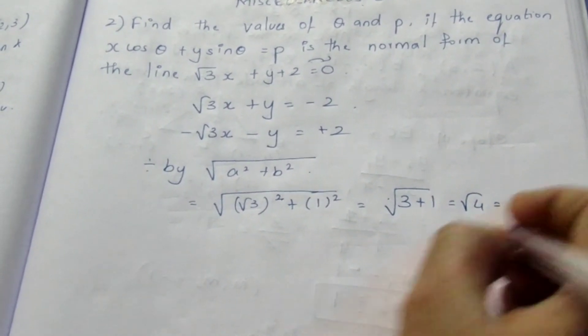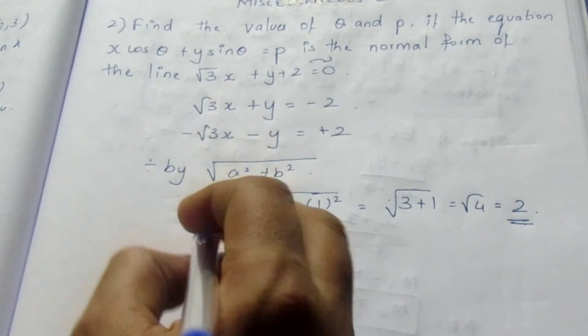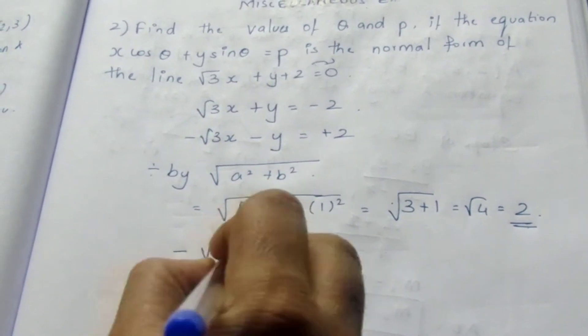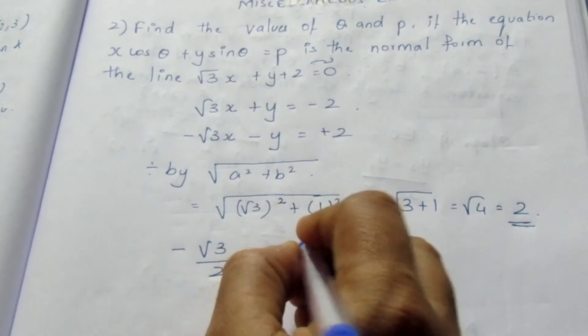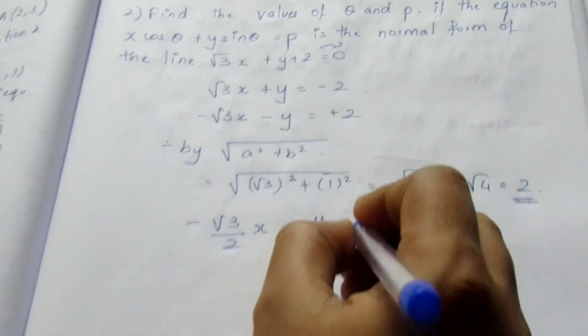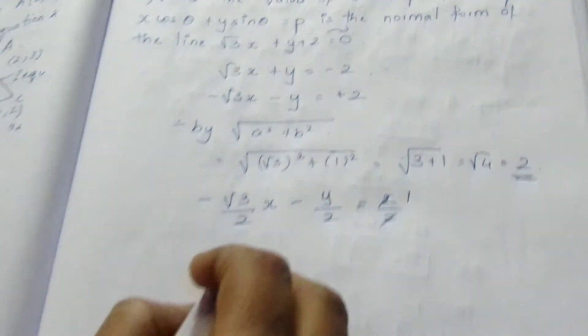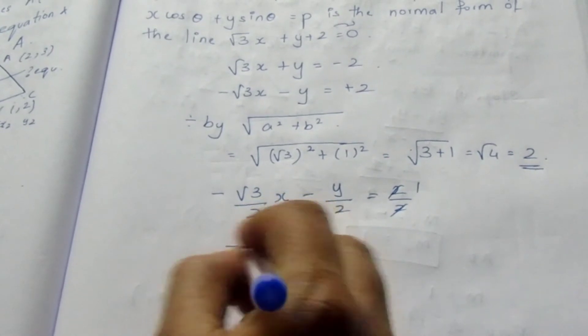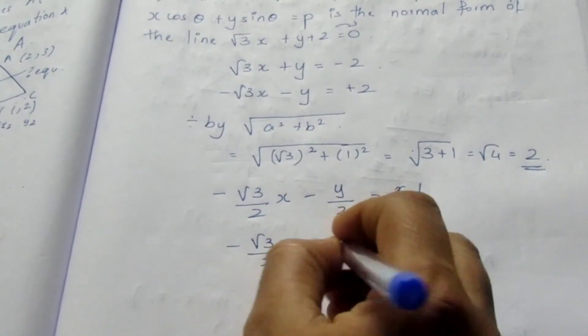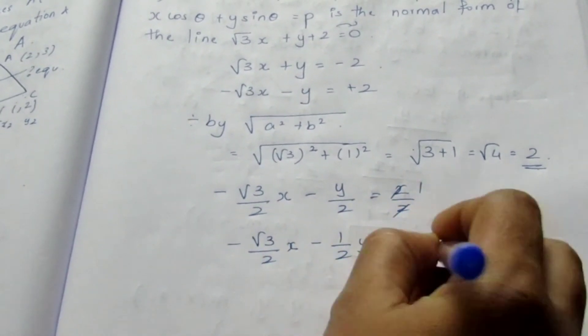The value is 2. We need to divide by this. It becomes minus root 3 by 2 into x minus y by 2 is equal to 2 by 2. We can cancel. It becomes 1. Root 3 by 2x minus 1 by 2y is equal to 1.